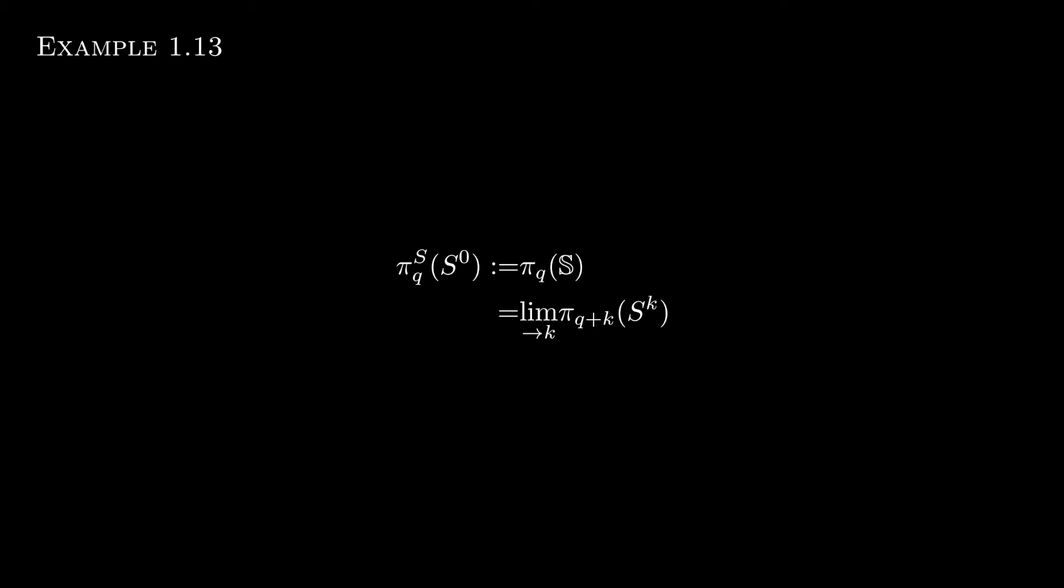If we recall the Freudenthal suspension theorem, we can do one better. The Q-th stable homotopy group of X under some assumptions, not just for the sphere spectrum, is attained at the stage Q+2 in the co-limit.